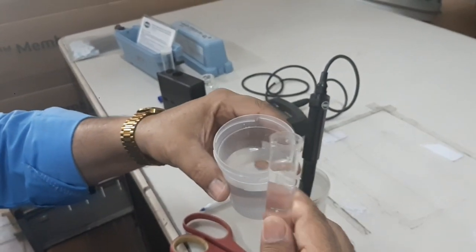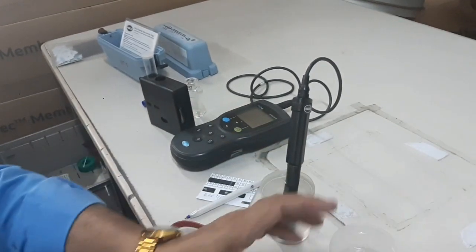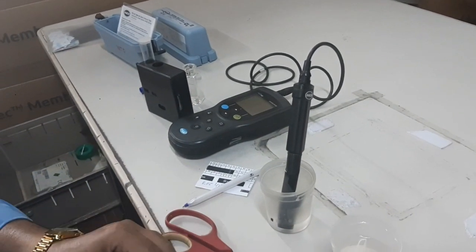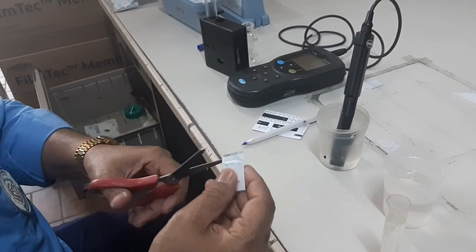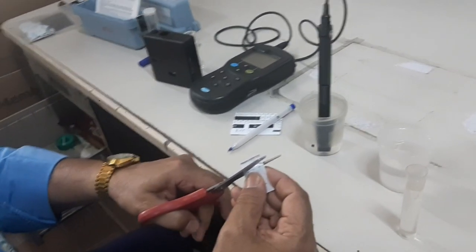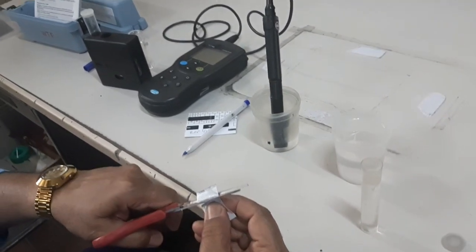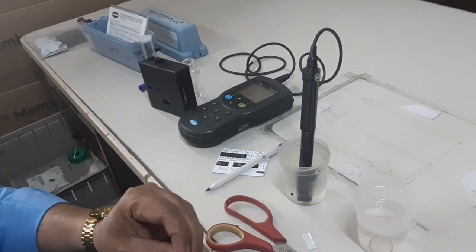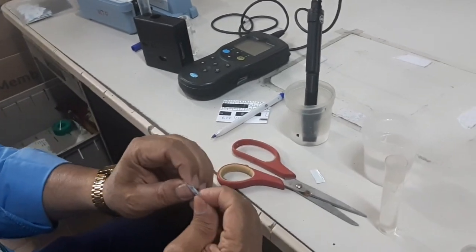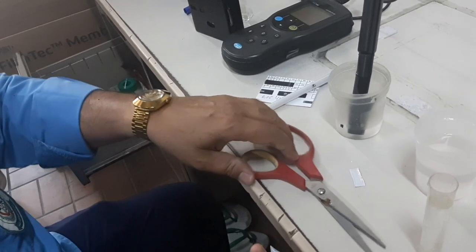he will add DPD powder chlorine. DPD means diethyl-p-phenylenediamine, so that we can create a color, and then after that, he will swirl the cuvette, and then he will put on the device, the colorimetric, in the colorimetric method, and the colorimetric device.